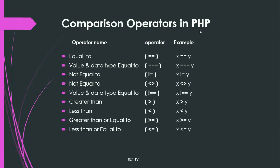Then we have two more operators: greater than or equal to (>=) and less than or equal to (<=). In the greater than or equal to operator, we use the greater than and equals to symbol to check that the value of x is either greater than or equal to y — when true, it generates one. Similarly, in less than or equal to, when the value of x is either less than y or equals to y, it will generate result one.